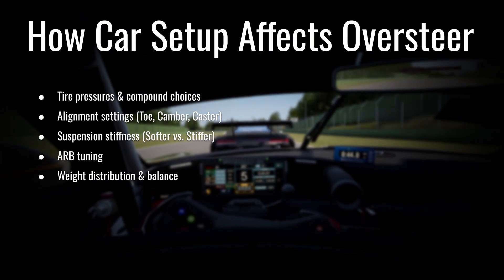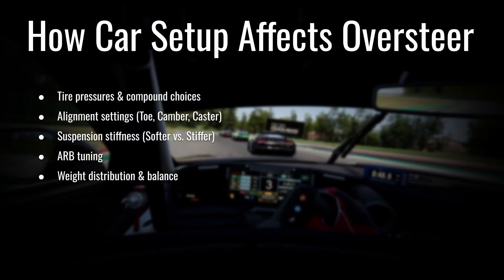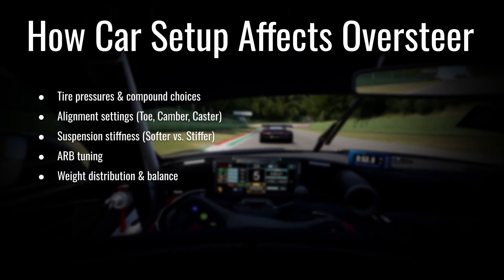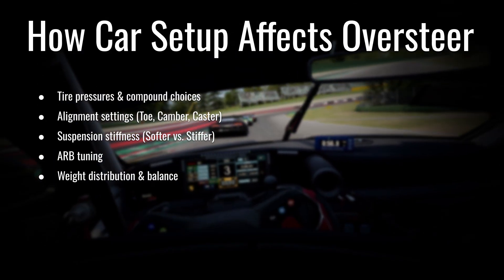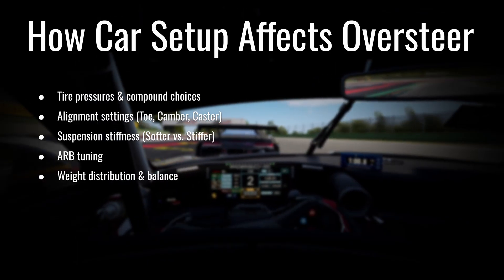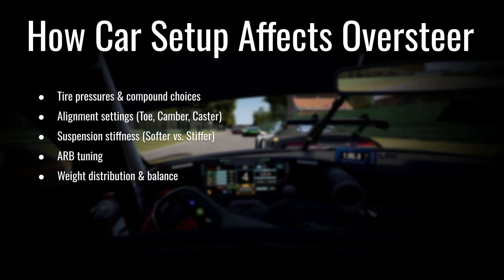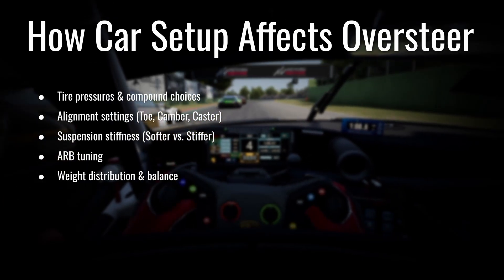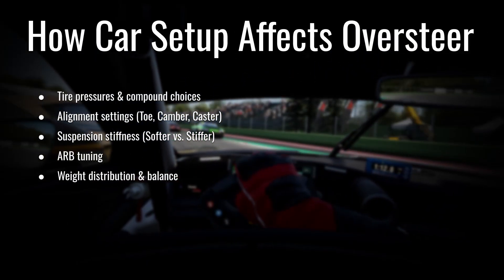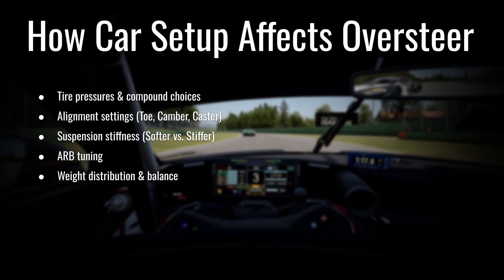Finally, weight distribution and ballast placement also matter. If you are placing ballast in the passenger seat, you could try moving it further back to get more weight on the rear tires if you're running into oversteer — or put it in the trunk or under the rear bumper. Moving ballast around would be a last-resort option to help mitigate oversteer.